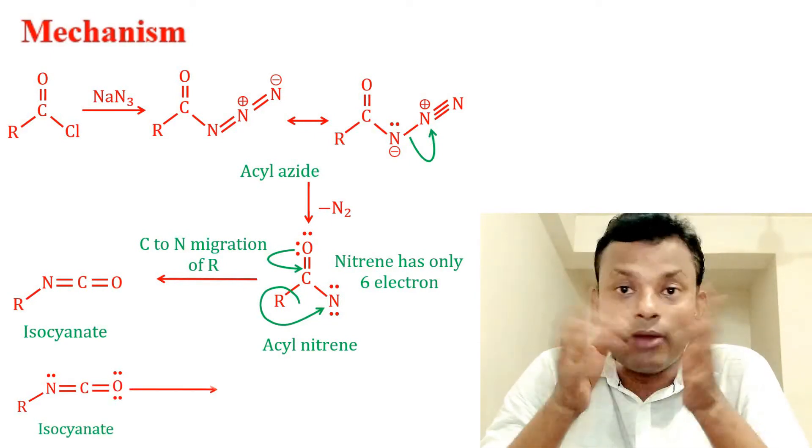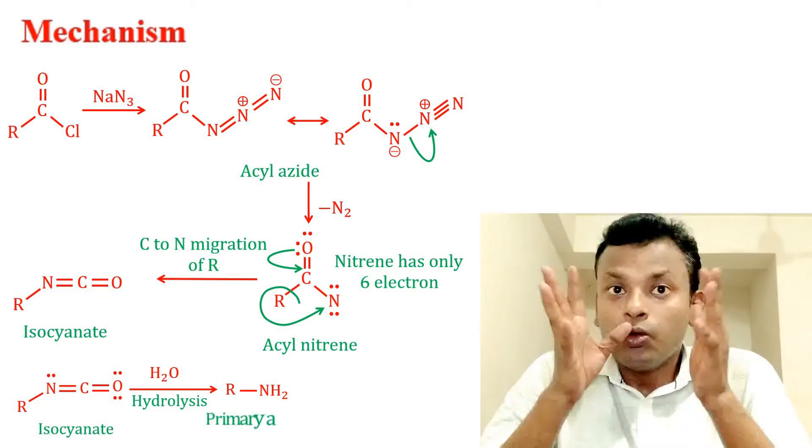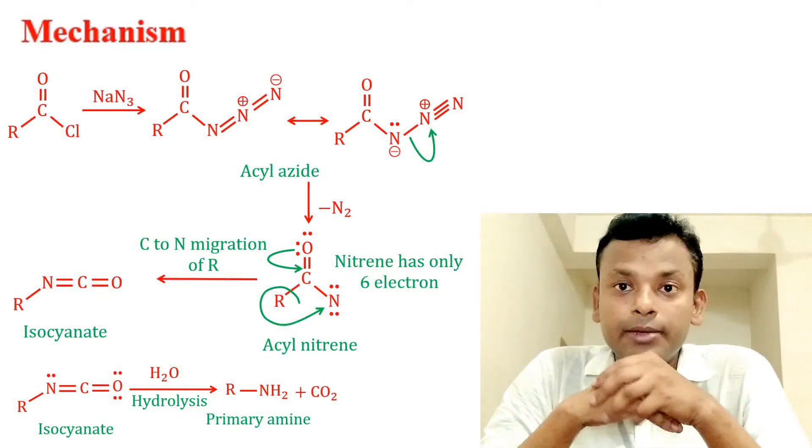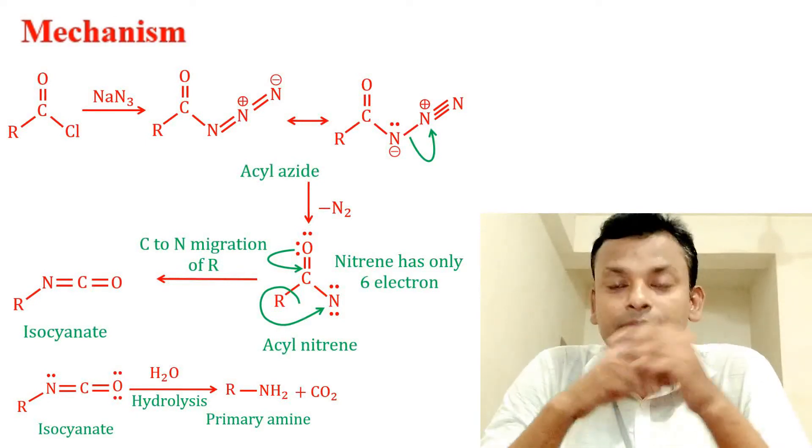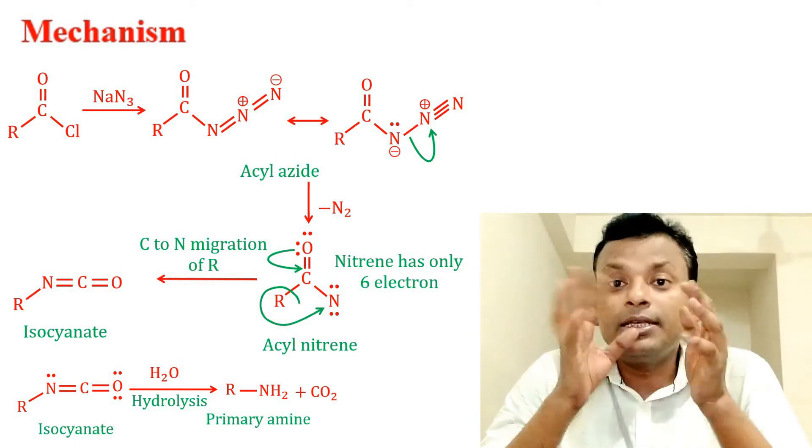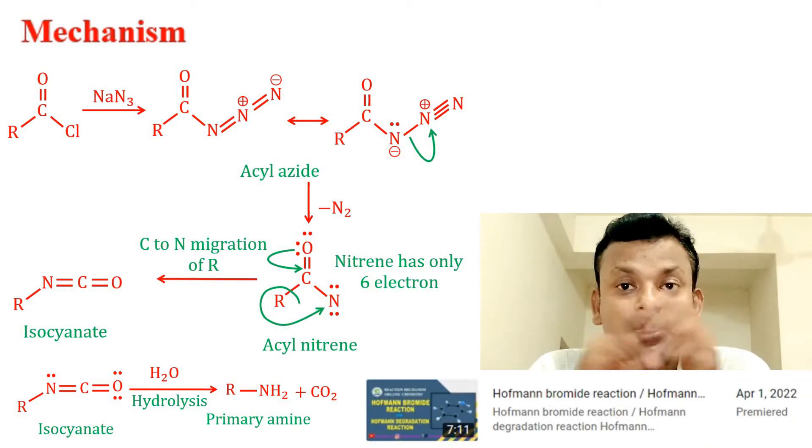The carbonyl group gives carbamic acid which decomposes to an amine. This mechanism we discussed in the video of Hofmann degradation reaction or Hofmann bromamide reaction.